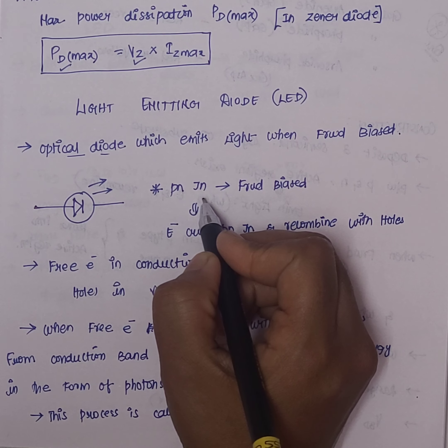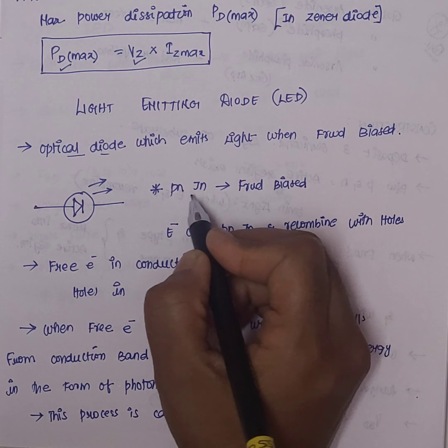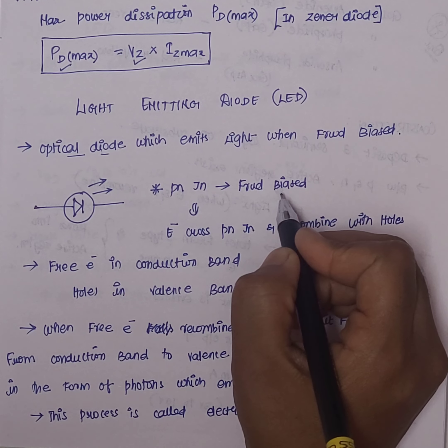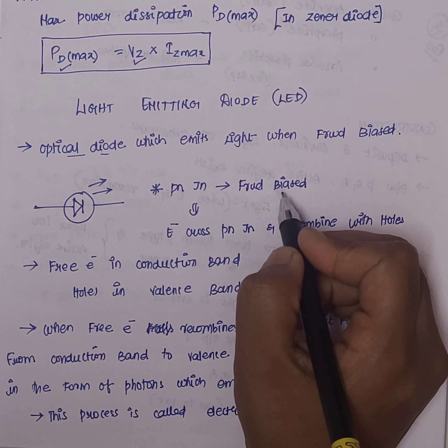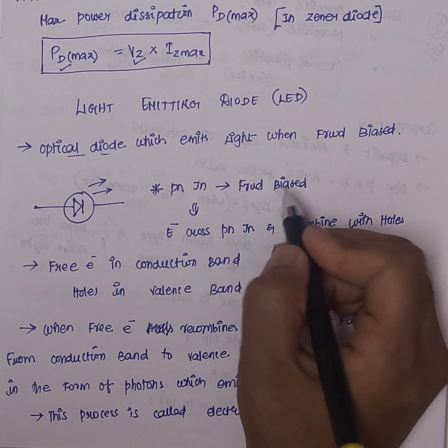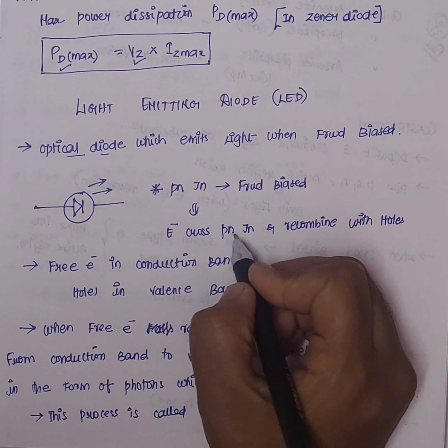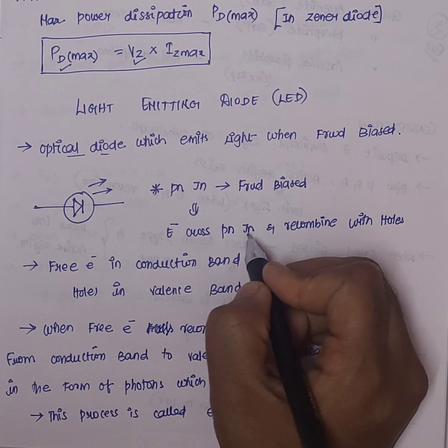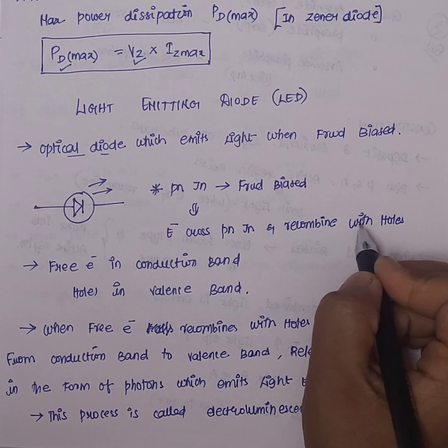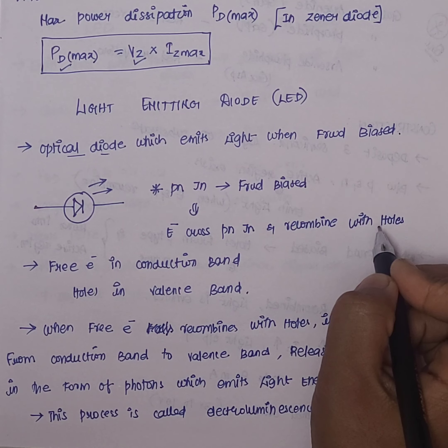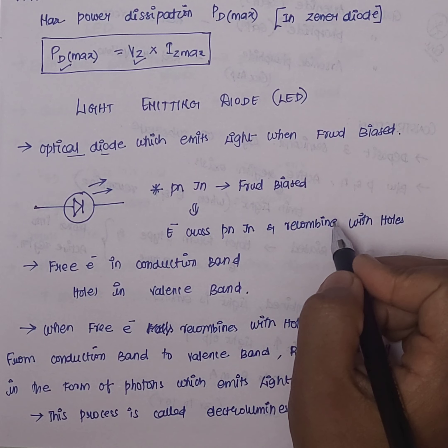This is a PN junction diode. The electrons will cross the PN junction and recombine with the holes.